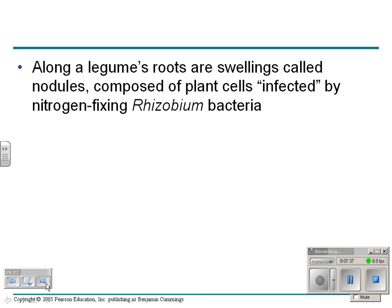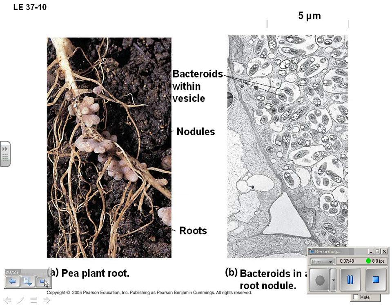Along their roots are swellings called nodules. These are composed of plant cells infected by a bacteria called Rhizobium. If you were to pull out a pea plant, you'd see all these nodules on its roots. Inside those nodules are bacteria that, as air filters down into the soil, convert nitrogen into nitrate and nitrite and other compounds.